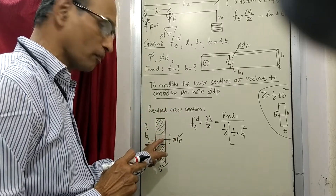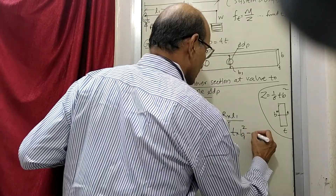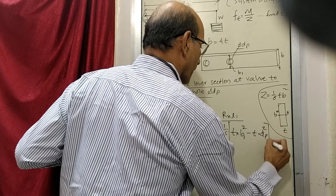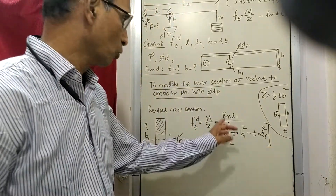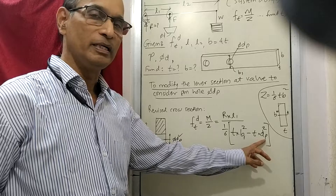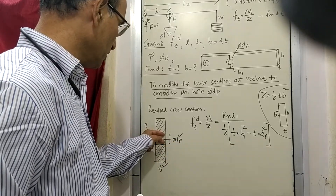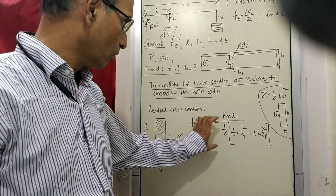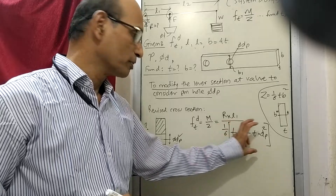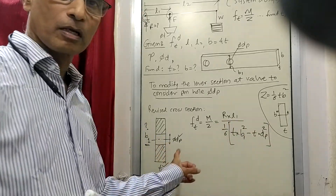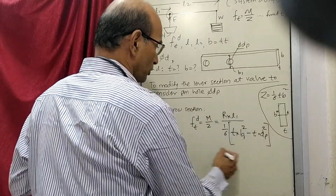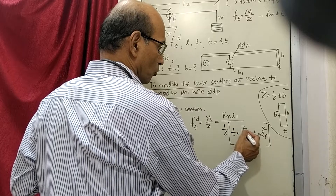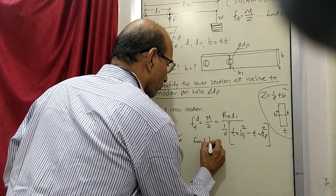We subtract the section modulus of the hole, so minus t into dp squared. We can factor out t, giving (1/6) of t times (b1 squared minus dp squared). The dp squared term is reduced from the whole section. We have derived the equation for section modulus for this particular section. In this equation, the only unknown is b1, so we can find out how much b1 is required.